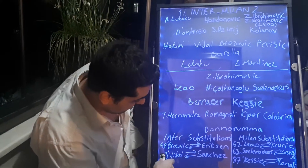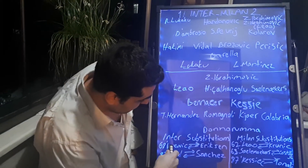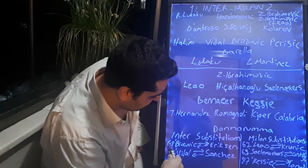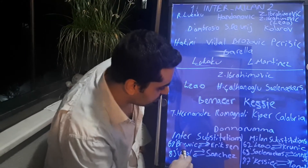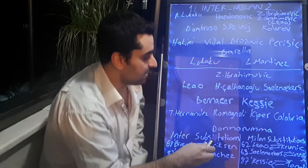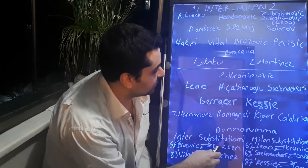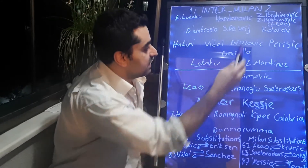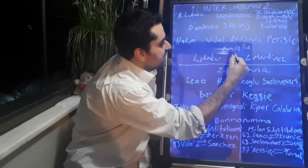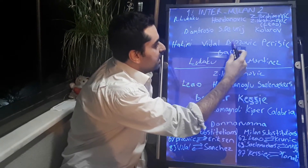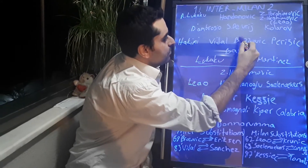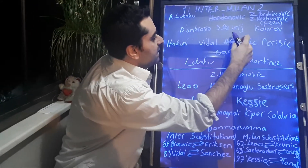Inter made their first substitution at 68 minutes: Brozovic went out and Eriksen came in. After this change, Eriksen started to play behind Lukaku and Lautaro Martinez, while Barella came in next to Vidal.